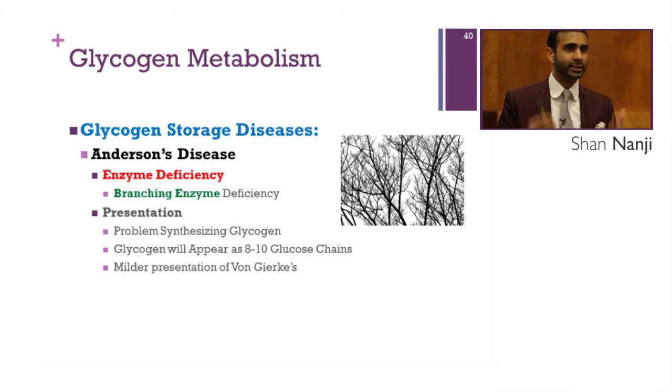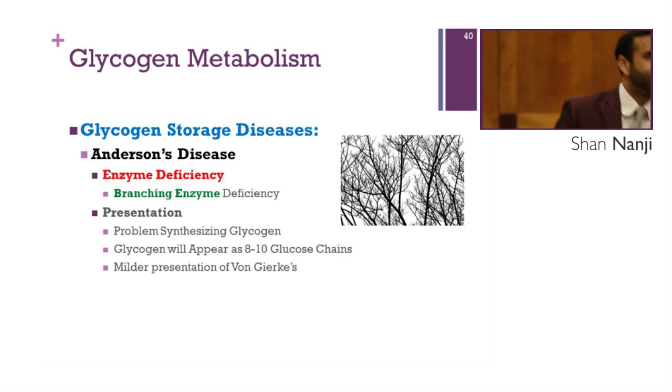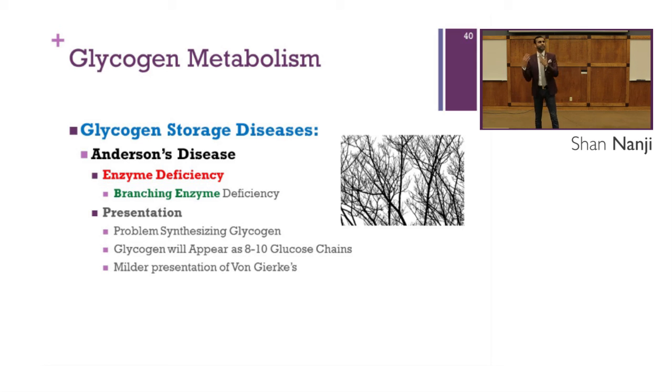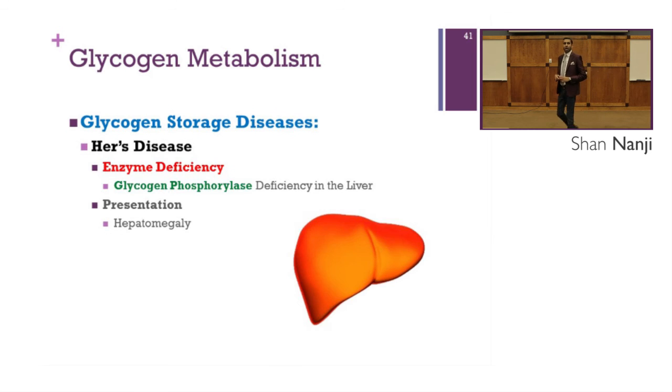Anderson's disease: the mnemonic is 'atonic baby, cirrhosis, death.' The enzyme deficient is the branching enzyme. The problem is difficulty synthesizing glycogen, so glycogen appears as six to ten glucose chains. The presentation is milder than Von Gerke's because you retain the ability to mobilize glucose from glycogen. Look for atonic baby, cirrhosis, and death as the presentation.